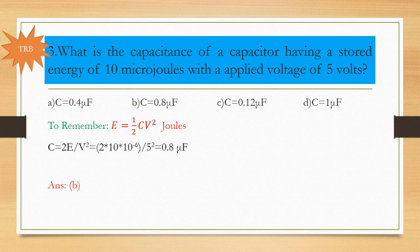Next question, also from TRB: What is the capacitance of a capacitor having stored energy of 10 microjoules with an applied voltage of 5 volts? Using E = ½CV², we know E and V, so C = 2E/V². Substituting gives C = 0.8 microfarad. Option B is the right answer.